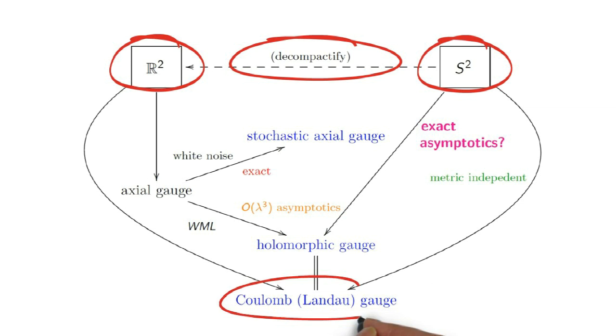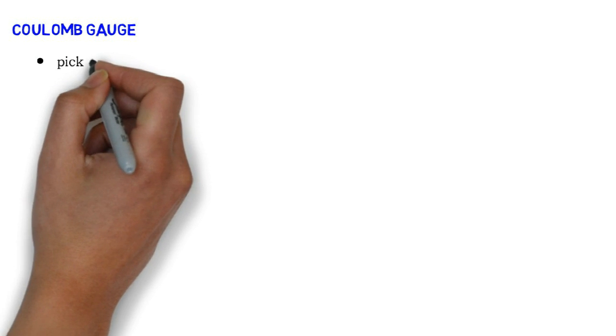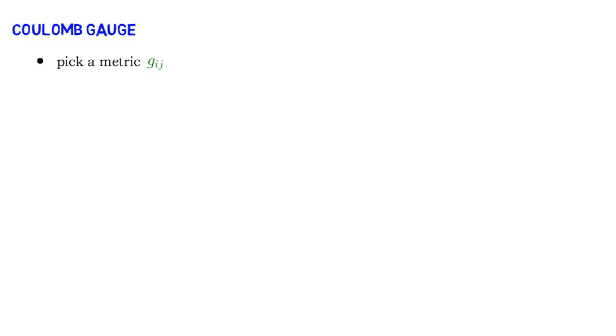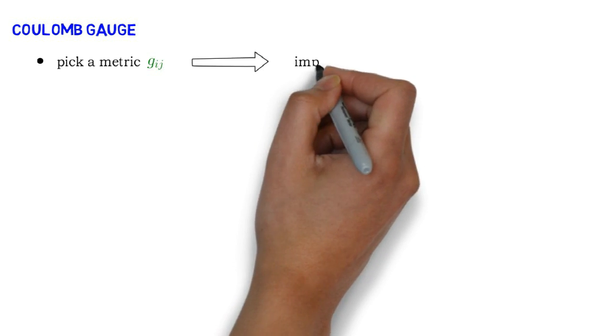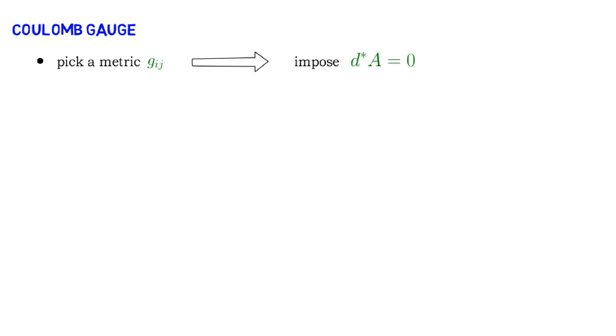Let's first discuss Coulomb gauge, also known as Landau gauge. This gauge requires the choice of an auxiliary Riemannian metric, which we should choose to be compatible with the area form we started out with. From this, we can impose the Coulomb gauge fixing condition, which is that d*A = 0.